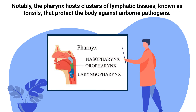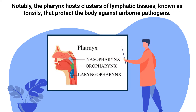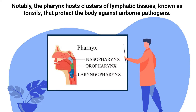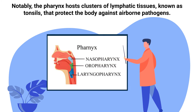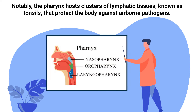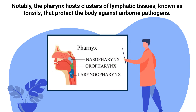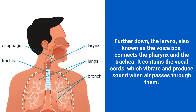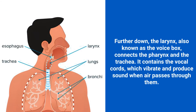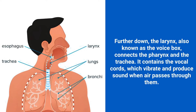Notably, the pharynx hosts clusters of lymphatic tissues known as tonsils that protect the body against airborne pathogens. Further down, the larynx — also known as the voice box — connects the pharynx and the trachea.